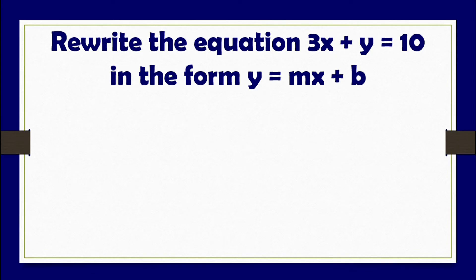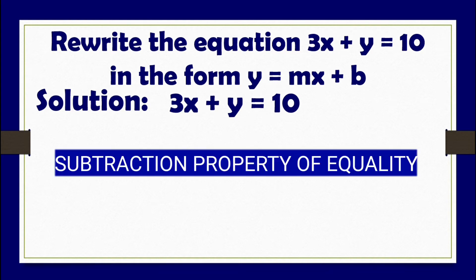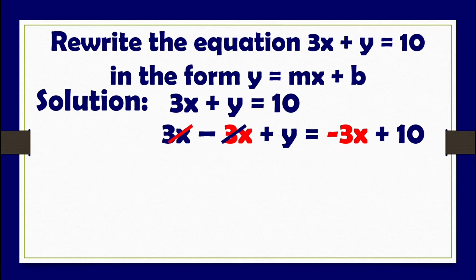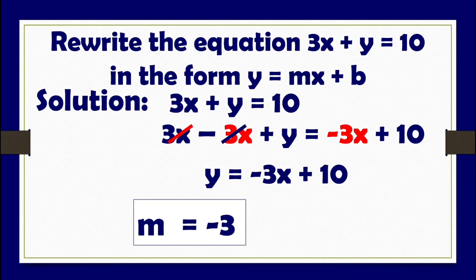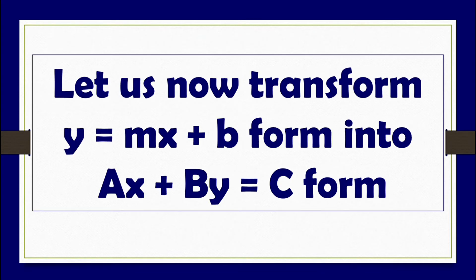Another example: rewrite the equation 3x plus y equals 10 in the form y equals mx plus b. We subtract both sides by 3x using the subtraction property of equality to eliminate 3x from the left side. The simplified equation is y equals negative 3x plus 10, where the slope is negative 3 and the y-intercept is positive 10.